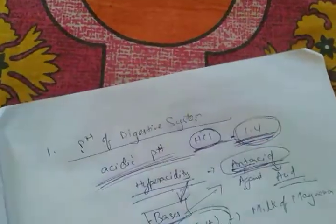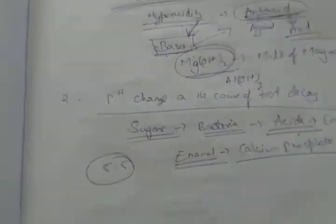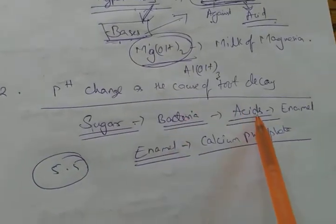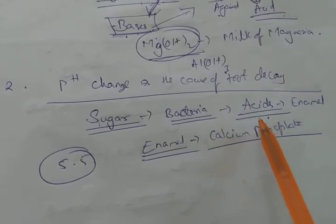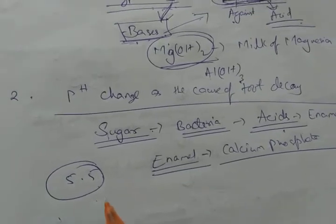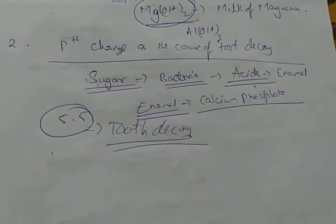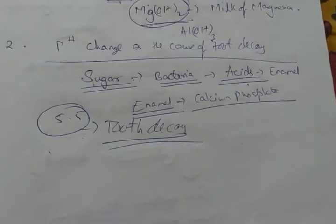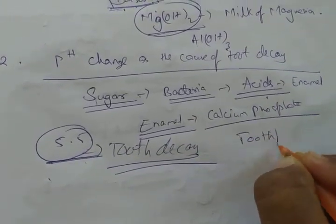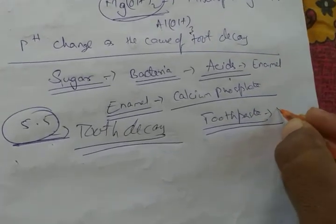This happens when the pH falls to 5.5 or below. Sugar is decomposed by bacteria to form acids, and if acid secretion is very high, it causes the pH to fall to 5.5 or below, which will cause tooth decay.